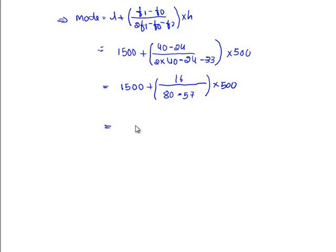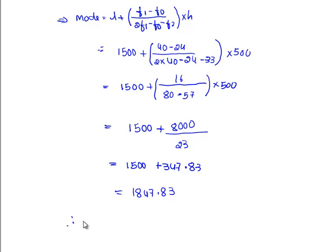Solving this, we get 1500 plus 16 into 500 is 8000 by 80 minus 57 is 23.